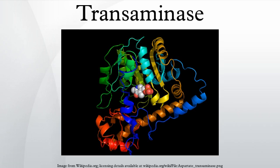Many transamination reactions occur in tissues, catalyzed by transaminases specific for a particular amino-ketoacid pair. The reactions are readily reversible, the direction being determined by which of the reactants are in excess. The specific enzymes are named from one of the reactant pairs — for example, the reaction between glutamic acid and pyruvic acid to make alpha-ketoglutaric acid and alanine is called glutamic-pyruvic transaminase, or GPT for short.